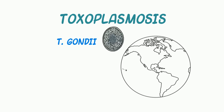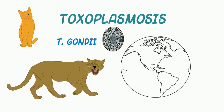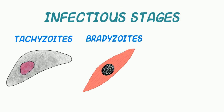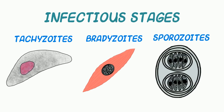Although T. gondii infects most species, domestic and wild cats constitute the only definitive host, and as such, they can serve as a main reservoir for infection. There are three infectious stages of T. gondii: tachyzoites, a rapidly multiplying form; bradyzoites, a tissue cyst form; and sporozoites, which exist in oocysts. More on the life cycle later.